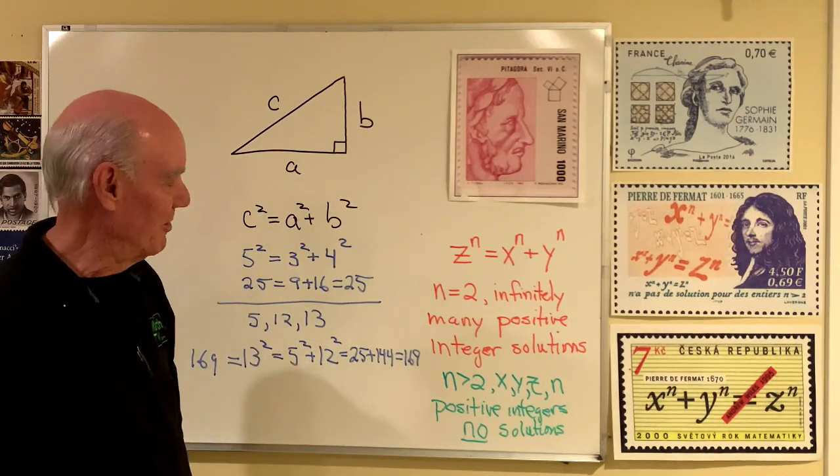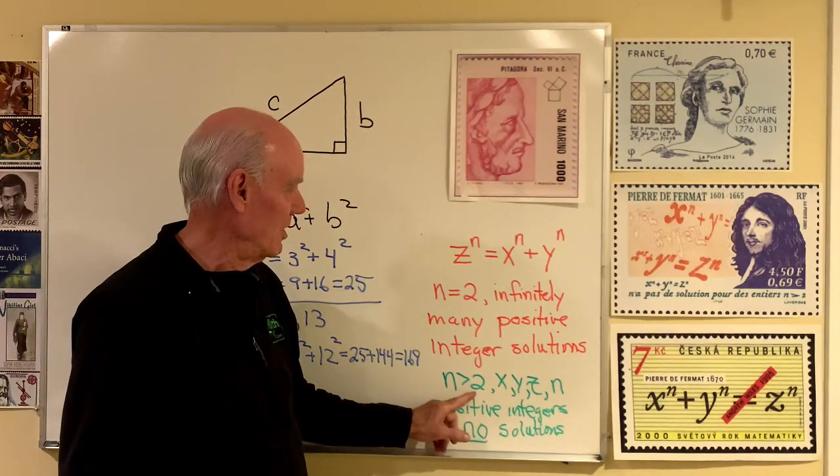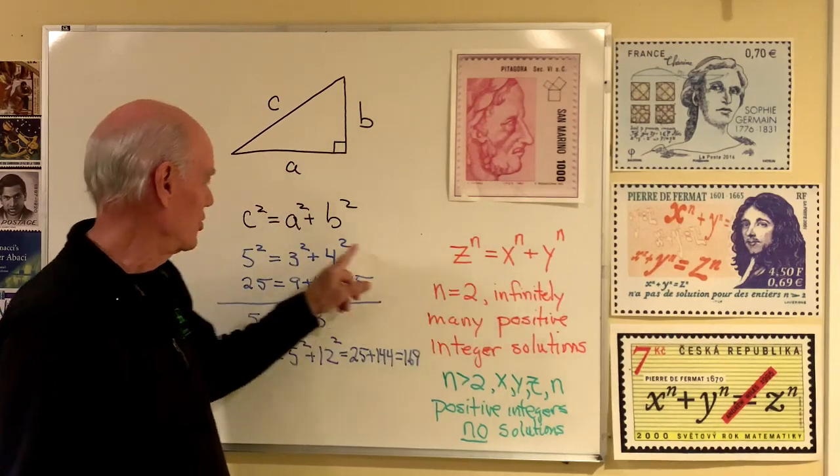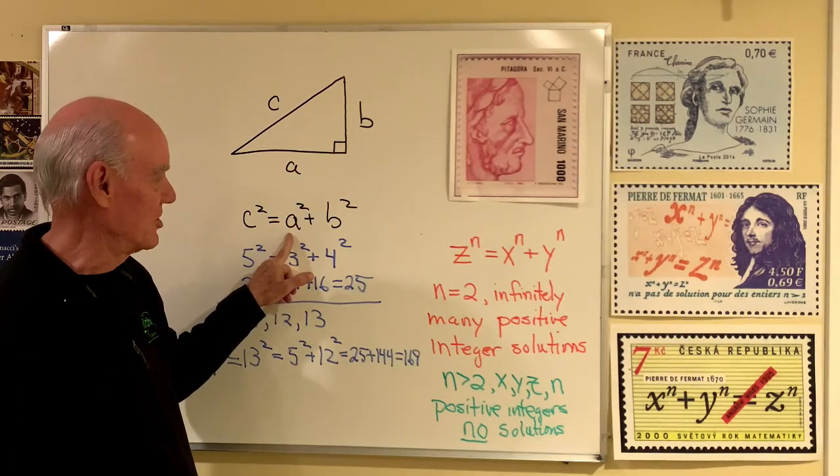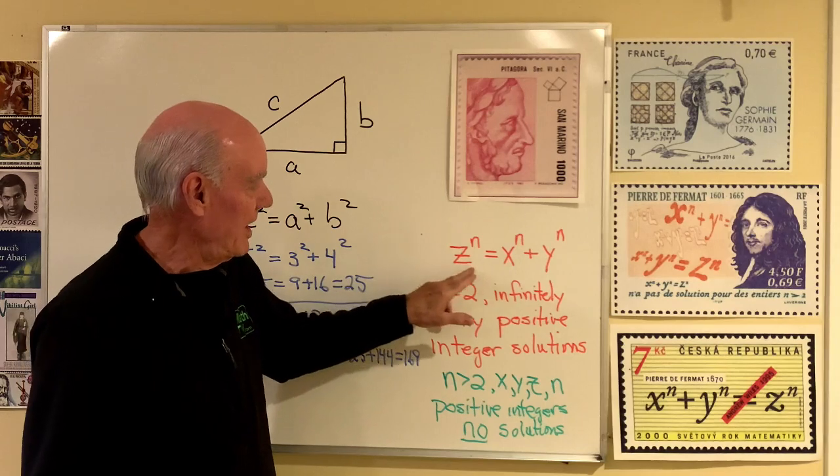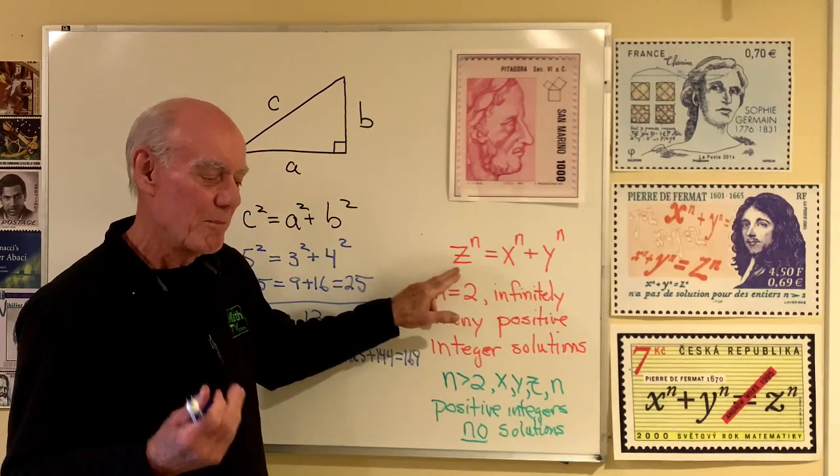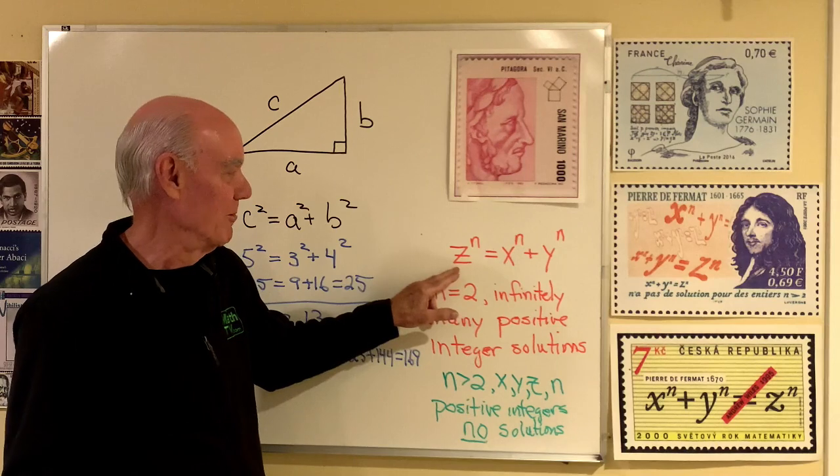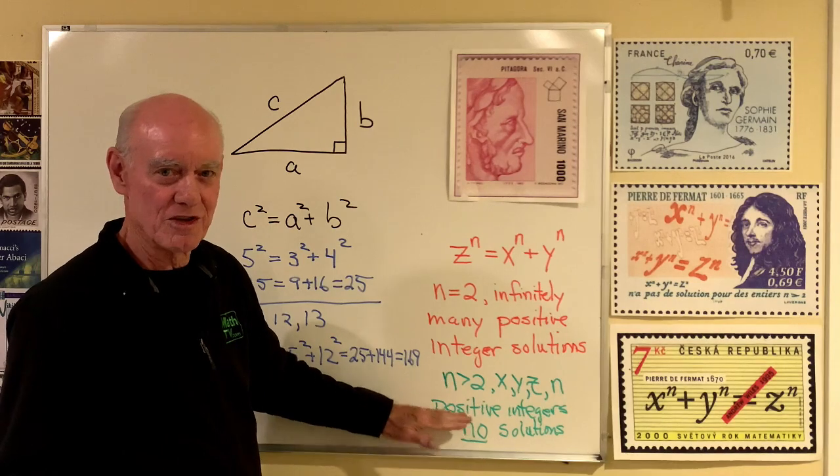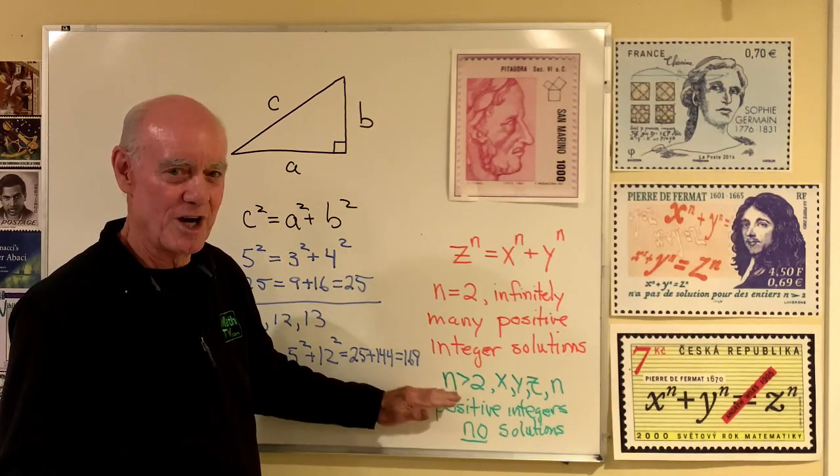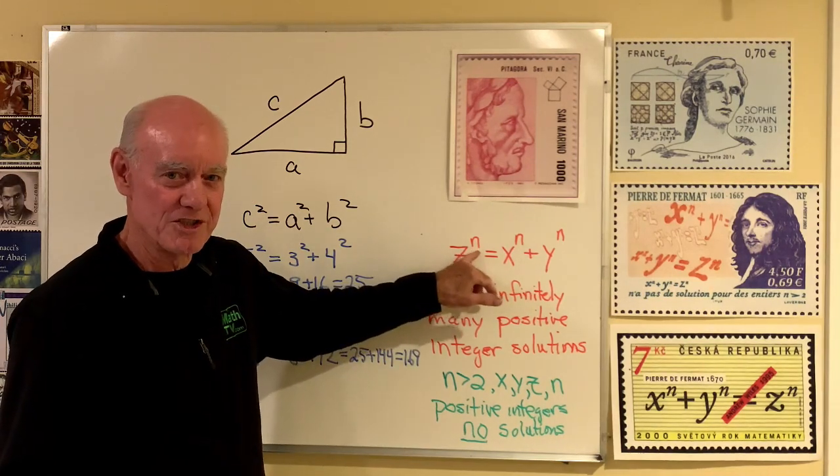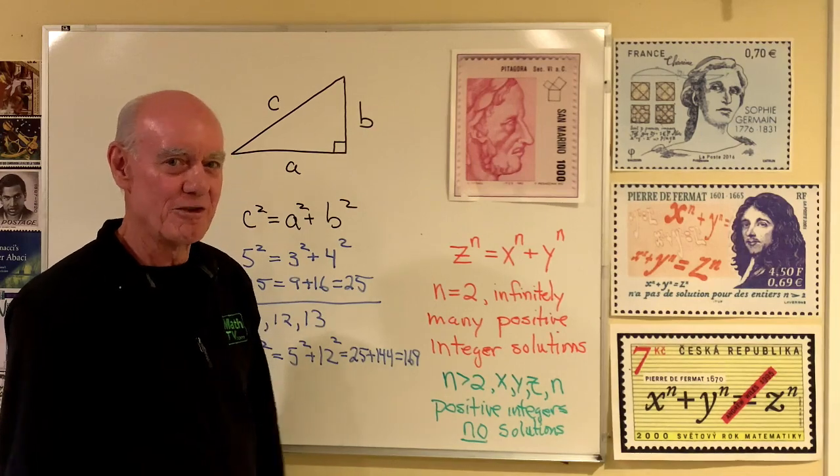Here's Fermat's last theorem. If n is greater than 2 in z to the nth equals x to the nth plus y to the nth. See, that looks just like this right here, but x, y, and z instead of a, b, and c. And the exponent now is a variable n. So if x, y, and z are positive integers or counting numbers, and n is also, once you get above 2 for n, no solutions. There are no positive integers x, y, and z that will satisfy this equation for n equal 3, 4, 5, 6. As far as you want to go, that's Fermat's last theorem.